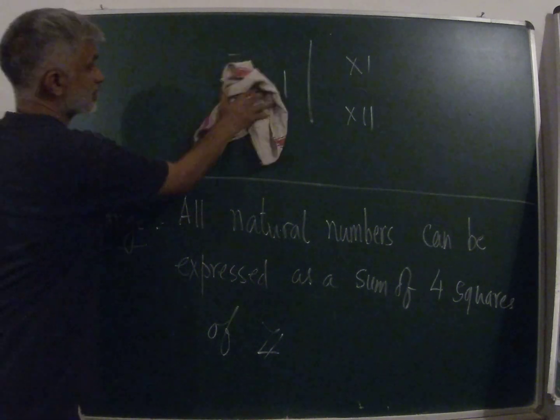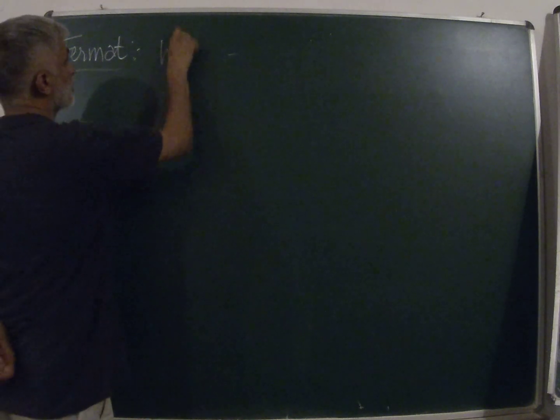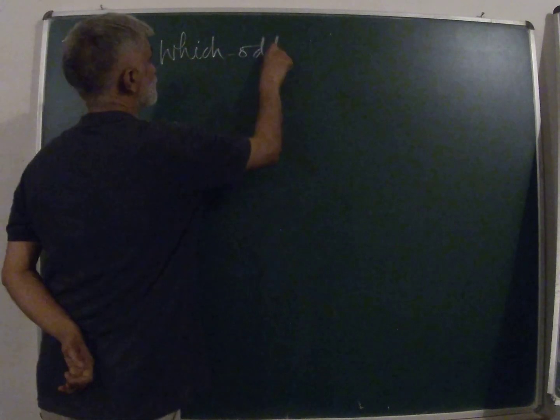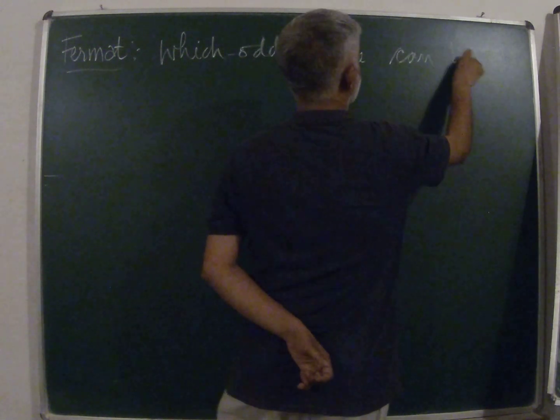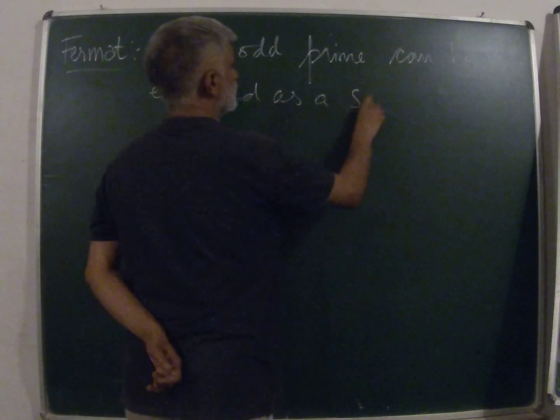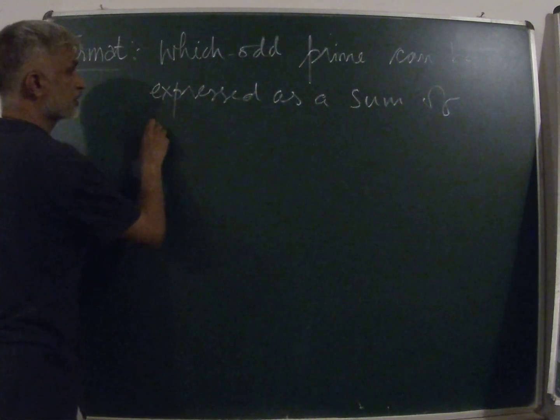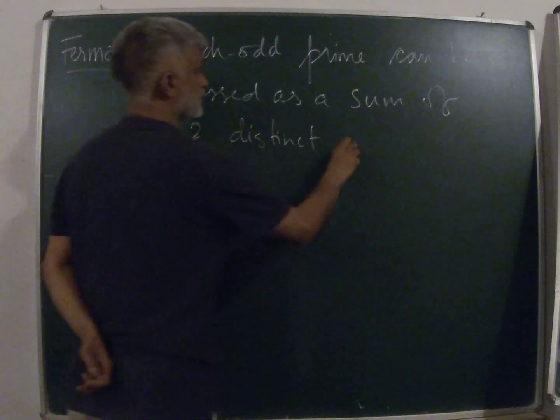There are two more theorems that are mentioned in this article, and one of them is by Fermat, and he addresses the question: which odd primes can be expressed as a sum of two distinct squares? They can't be identical squares.